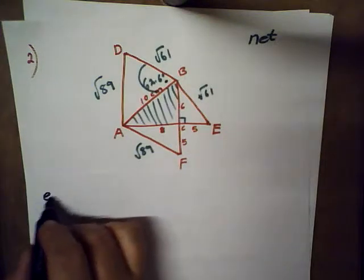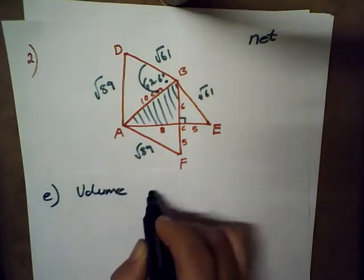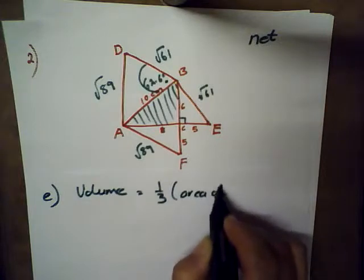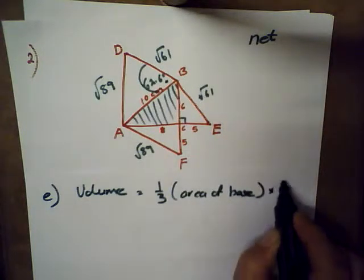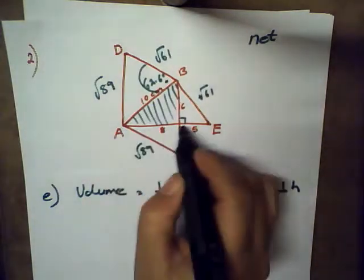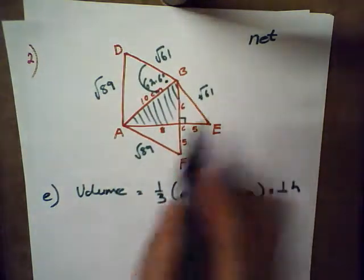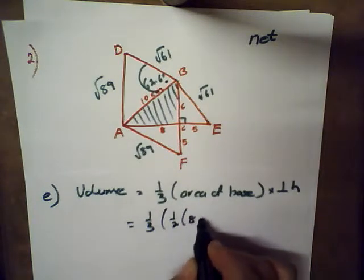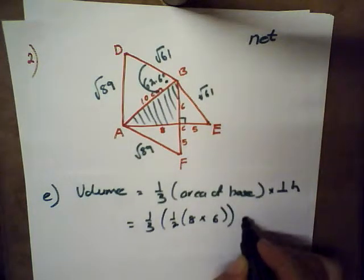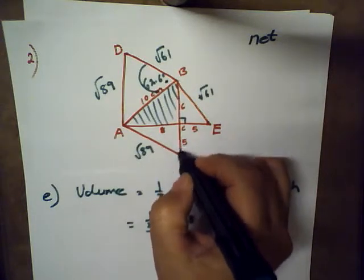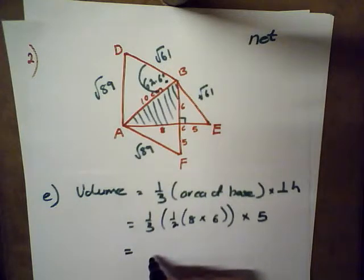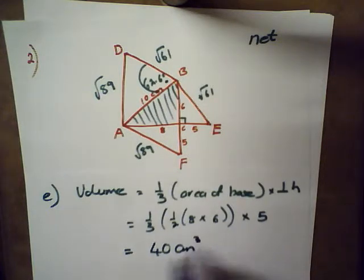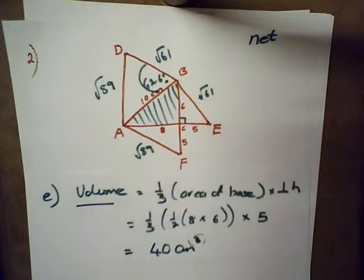Calculate the volume of the solid, of the triangular prism. That would give us a third times the area of the base times the perpendicular height. We know that the area of the base is ABC. So a third times the base, that would be 8 times the height, that was 6 times the perpendicular height, and this prism will be 5 centimeters tall. I tap that into my calculator and I get 40 centimeters cubed. It's volume, so my answer should be in terms of cubes.